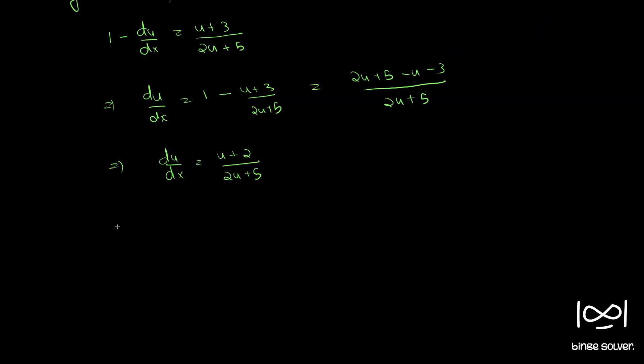Now, using method of separation of variables, bringing all the u terms to one side, we get 2u plus 5 by u plus 2 du equal to dx.